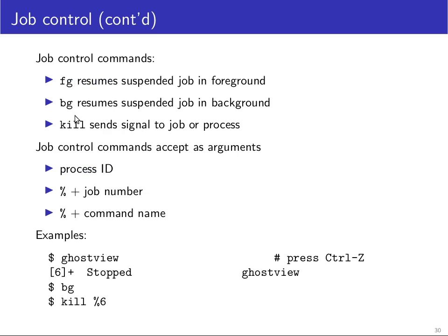There are three job control commands in the shell: fg resumes a suspended job in the foreground; bg resumes a suspended job in the background; and kill sends a signal to either a job or a process. All three expect as their argument either a decimal number — interpreted as a process ID — or a decimal number prefixed with a percent sign, which is interpreted as a job number, the number you got in square brackets or from the jobs command.